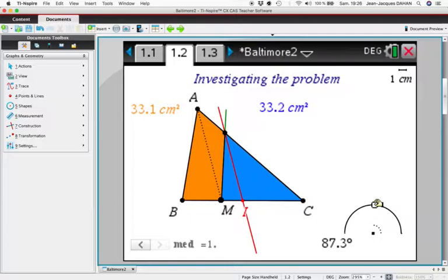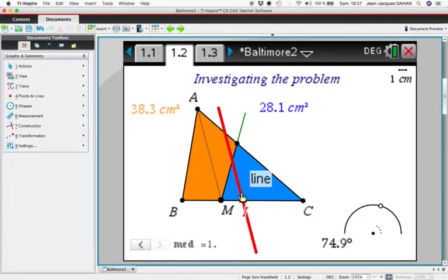So in order to obtain this line, we have to display the intersection point of the parallel line to AM and this side.